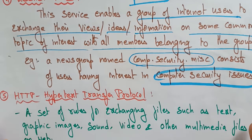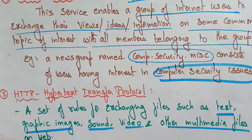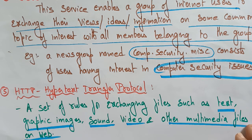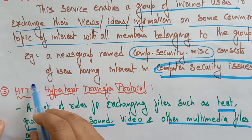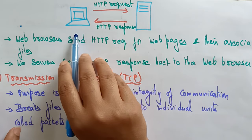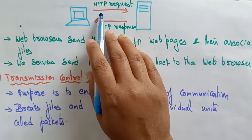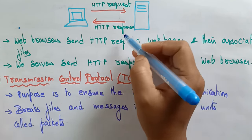Another basic service provided by the internet is HTTP — Hypertext Transfer Protocol. It is a set of rules for exchanging files such as text, graphic images, sounds, videos, and other multimedia files on the web. Here, from your local computer with internet connection, an HTTP request is sent to the server, and the server responds with an HTTP response.